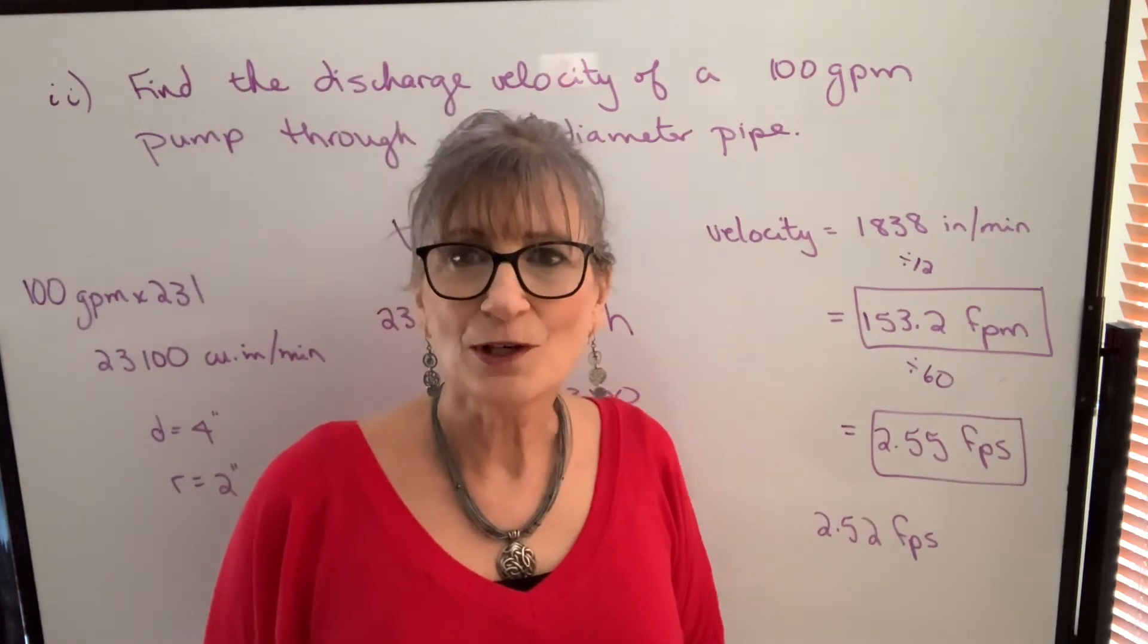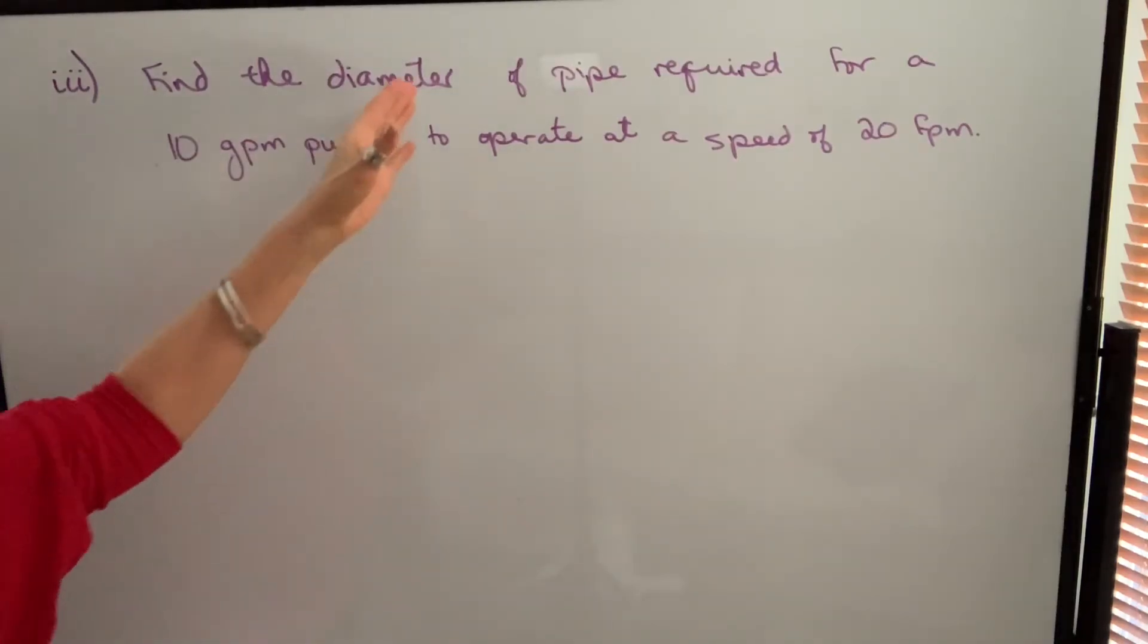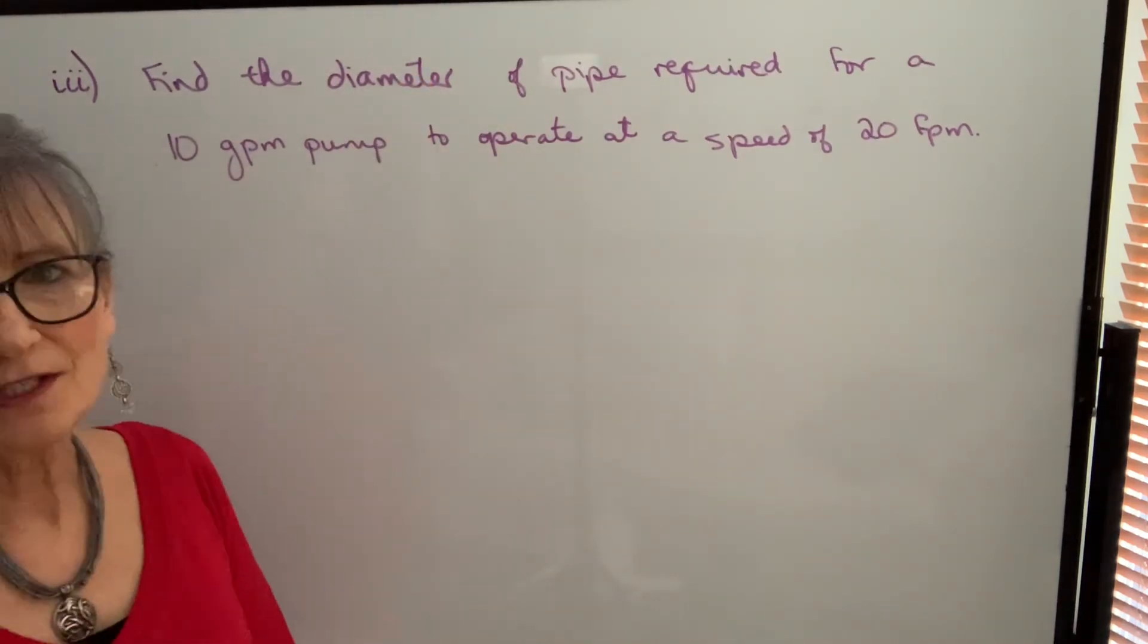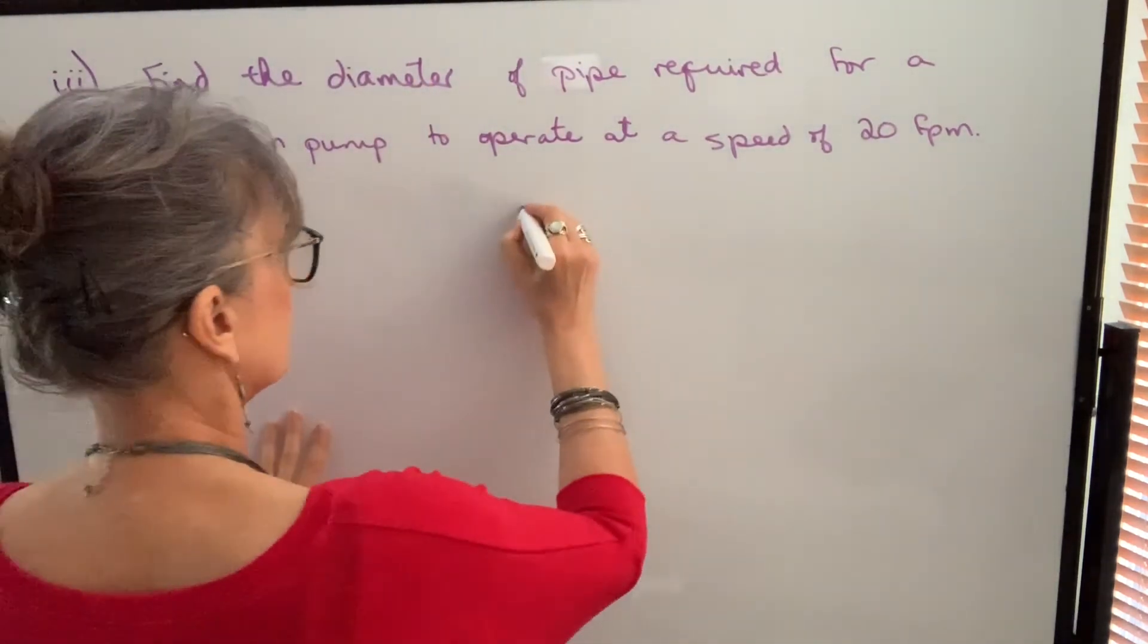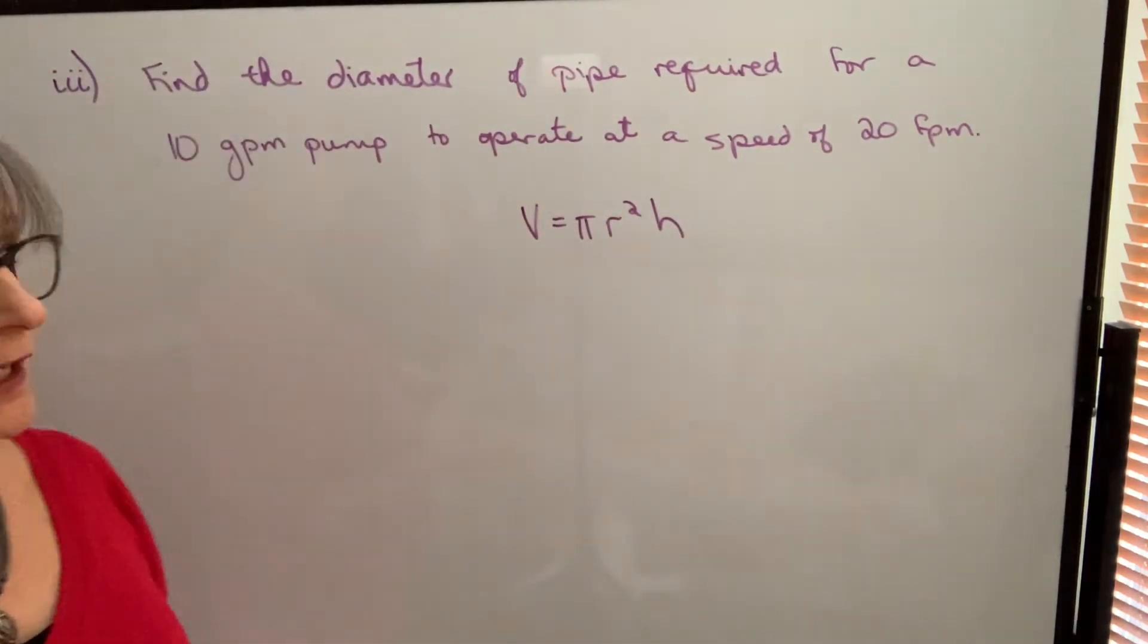Let's look at one last type of question you might encounter. In this last example, we're asked to find the diameter. While our formula doesn't have diameter, it has radius. So what we're going to do is find the radius and then we'll find the diameter.